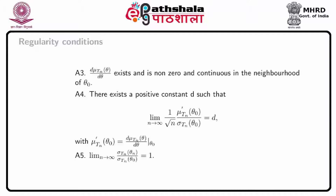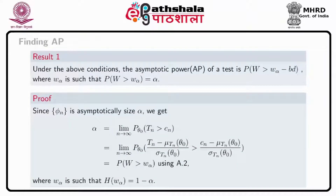Under the above assumptions, the asymptotic power AP of a test is the probability that W is greater than w_alpha minus B*D, where w_alpha is such that the probability measure of W greater than w_alpha equals alpha.